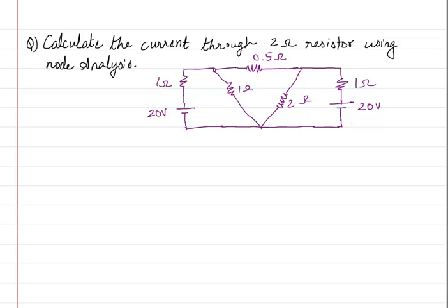The very first thing we always do is define the nodes and the reference node. This one here is one single node — I will mark it as the first node. Another connection here is one single node — that is going to be my second node.